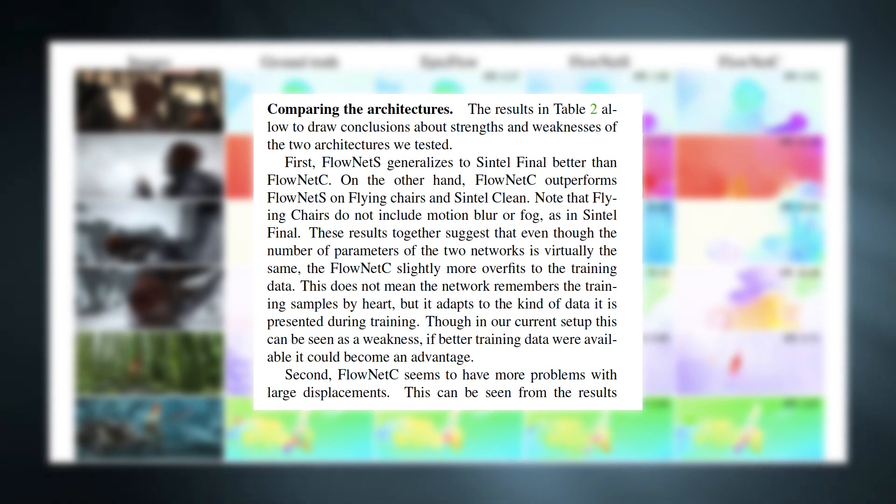According to the authors, FlowNet with correlation layer tends to learn the features better and can provide superior result if trained on realistic large dataset. Another issue of FlowNet with correlation layer is it struggles to identify motion with long displacement.